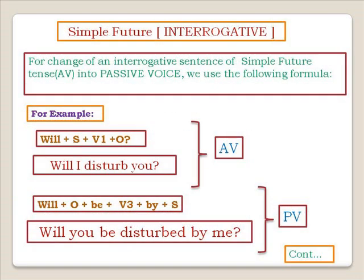For simple future interrogative, the active formula is: Will + Subject + Verb 1 + Object. Example: 'Will I disturb you?' The passive formula is: Will + Object + be + Verb 3 + by + Subject. Example: 'Will you be disturbed by me?' That's the passive interrogative future tense.